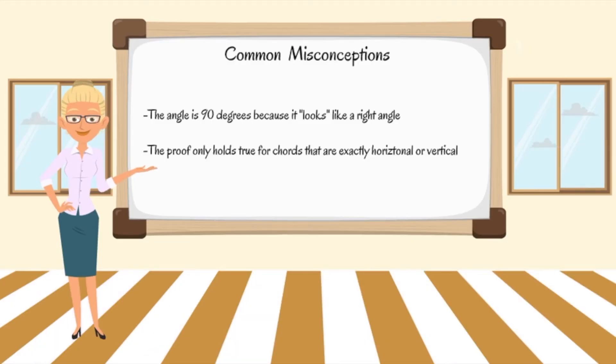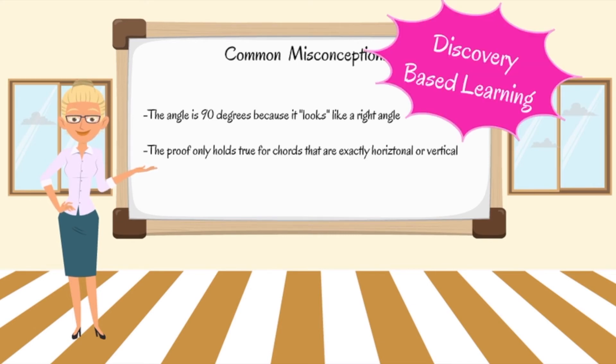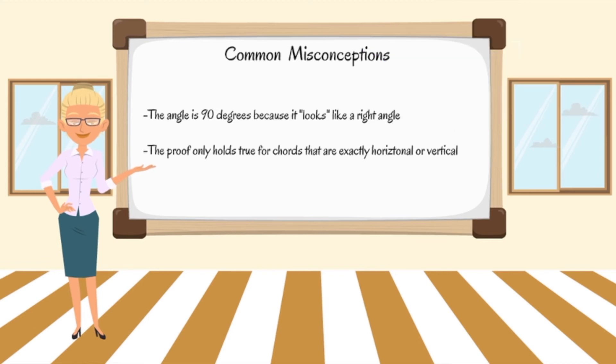Common misconceptions include students incorrectly assuming the value of an angle because it looks like a 90 degree angle or that the proof only holds true for horizontal and vertical chords. These misconceptions are overcome with the use of a discovery-based approach to proofs in conjunction with the pedagogic strategy of conjecturing and convincing. This encourages students to provide strong evidence for each mathematical statement that they make until they are convinced of their reasoning.